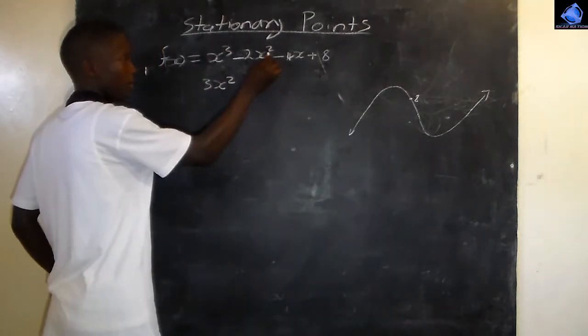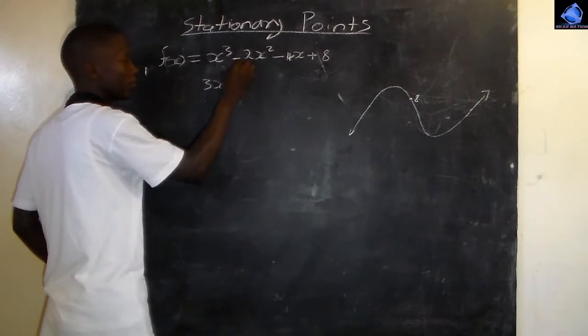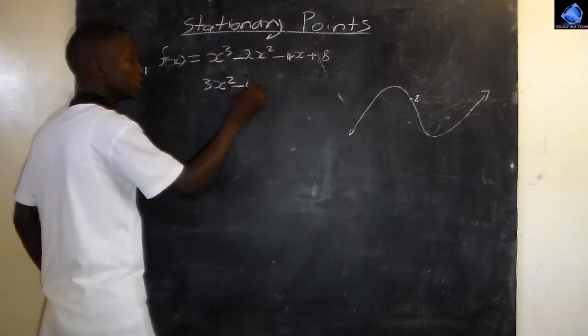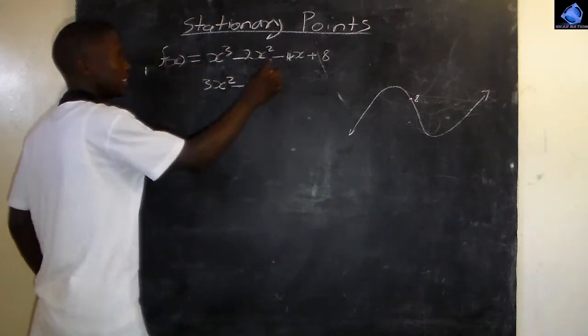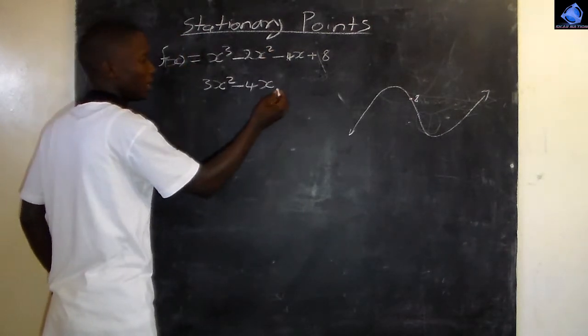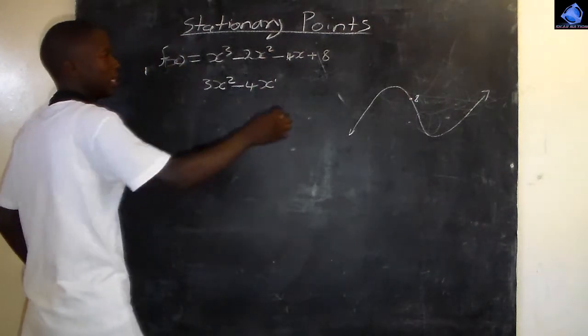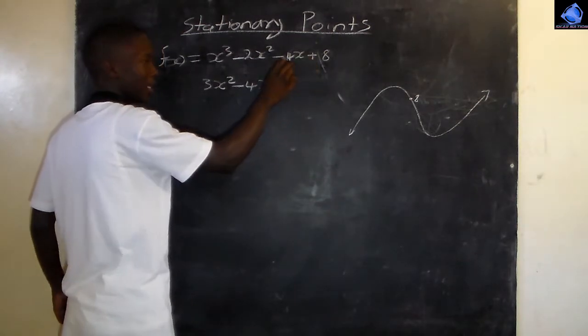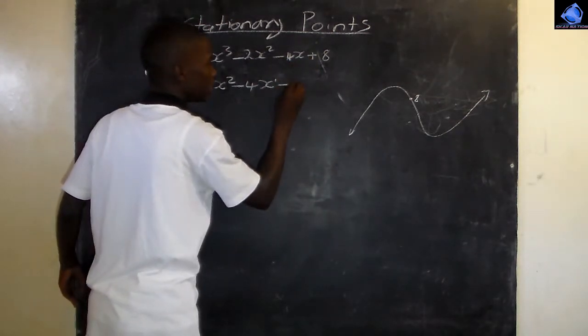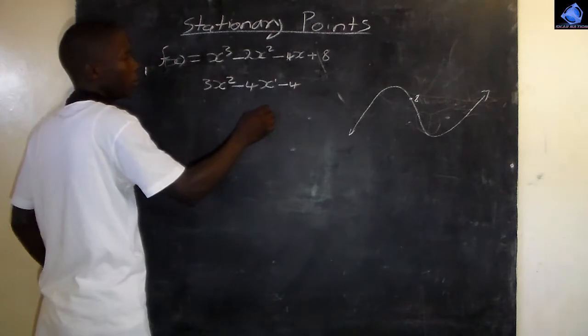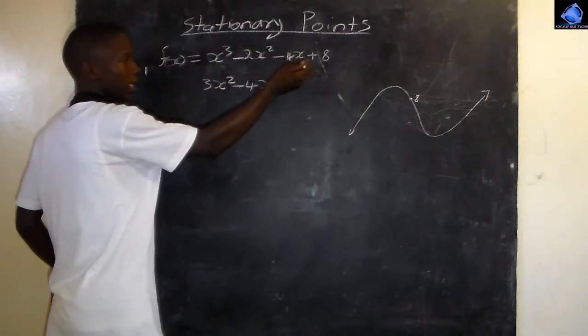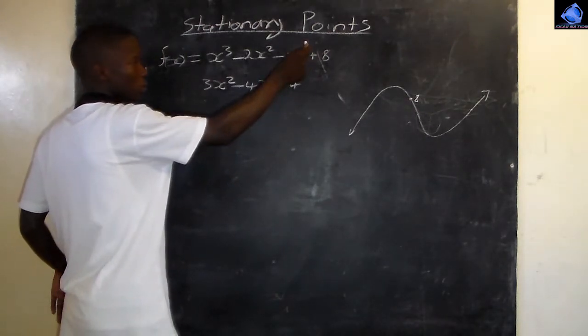Then negative 4 times 1 gives negative 4. So f prime of x equals 3x squared minus 4x minus 4.